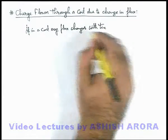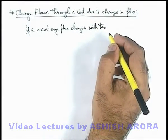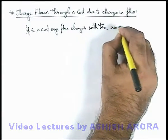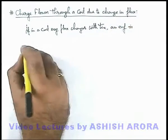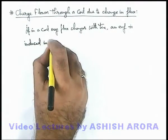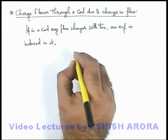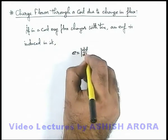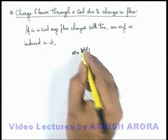in any way, either by change in magnetic field or movement of coil away from magnetic field, an EMF is induced in it. The magnitude is given as magnitude of dφ/dt, that is the rate of change of flux.